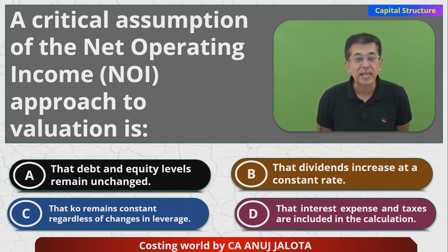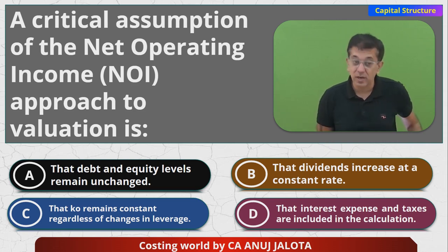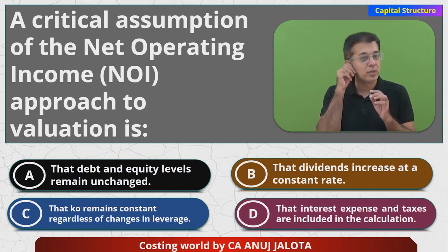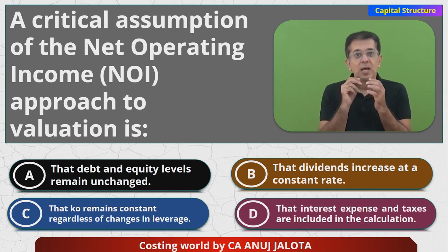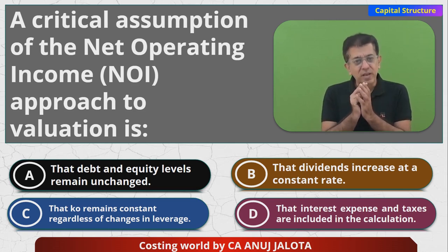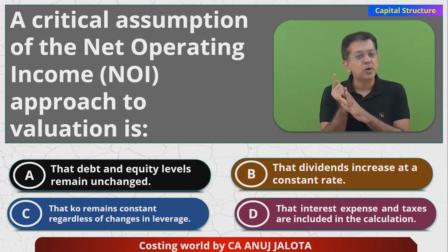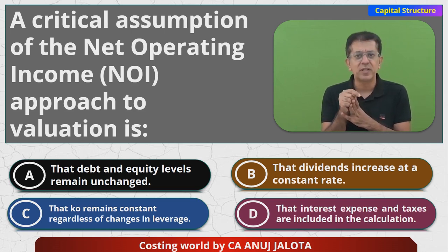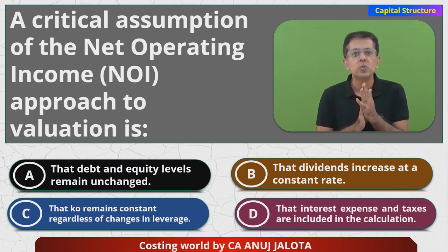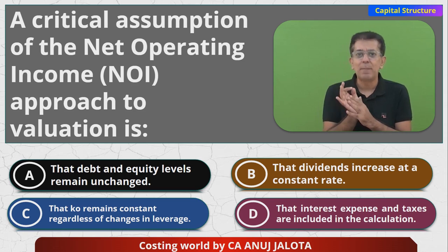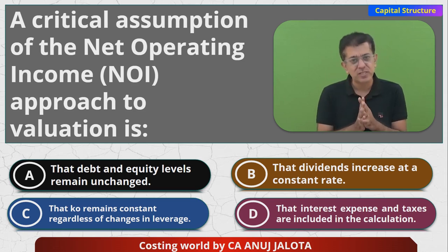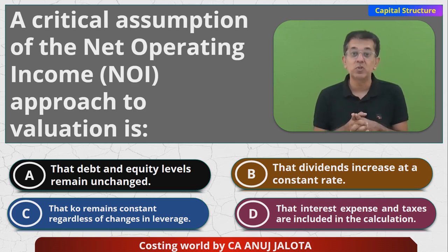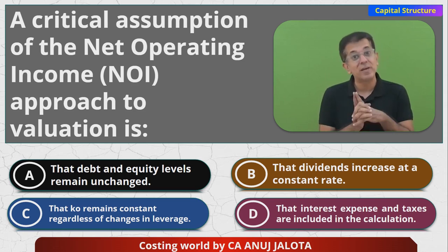The Traditional approach told that whenever you keep on introducing debt, initially Ko might start to fall, but then after that it will start to increase also. The capital structure is best where Ko will be least — that was the view of the Traditional approach.